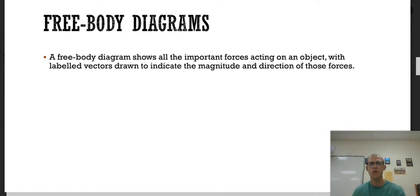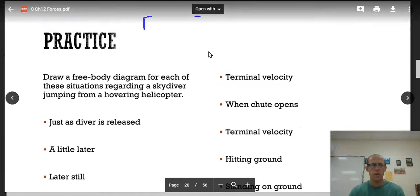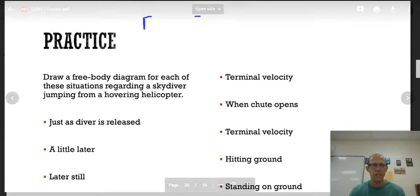We've talked about free body diagrams already. We're just going to do a little bit of a recap now. We want to draw a free body diagram for each of these situations regarding a skydiver jumping from a hovering helicopter. First, we have a skydiver as they are released. They're in the air, jumping out. Their free body diagram is just the force due to gravity.